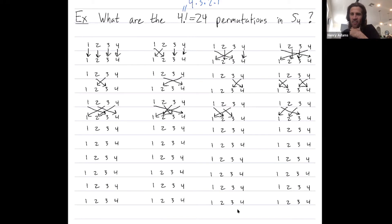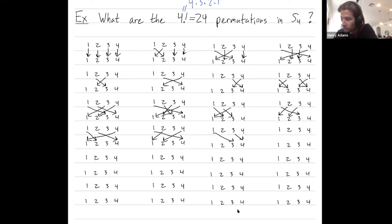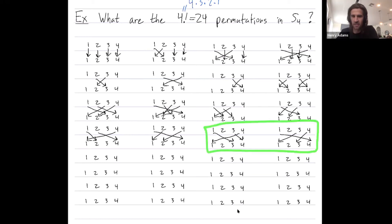Let's consider the 3-cycles on all other triples. For {1, 2, 4}: 1 to 2, 2 to 4, 4 to 1, with 3 staying put — or the reverse: 1 to 4, 4 to 2, 2 to 1. For {1, 3, 4}: 1 to 3, 3 to 4, 4 back to 1 — or the reverse: 1 to 4, 4 to 3, 3 back to 1. When you do 3-cycles in reverse order, they are inverses of each other — if I send 1 to 3 and then 3 back to 1, I get back where I started.